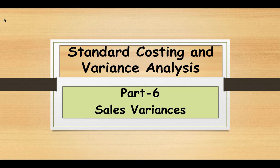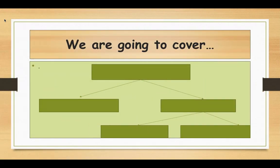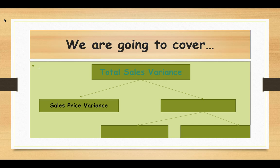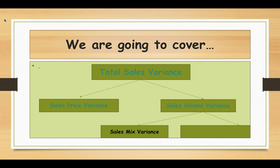Welcome to Management Accounting Made Easy. This is part 6 of standard costing and variance analysis. In this part 6, we are going to cover the sales variances. Total sales variance can be subdivided into sales price variance and sales volume variance. Sales volume variance can be further subdivided into sales mix variance and sales quantity variance.